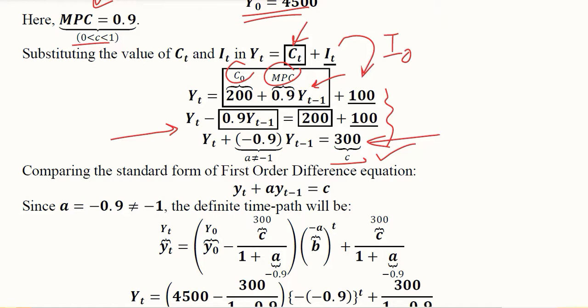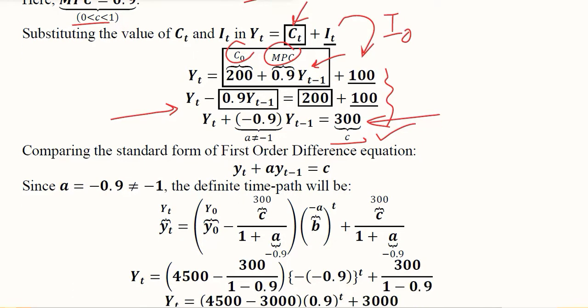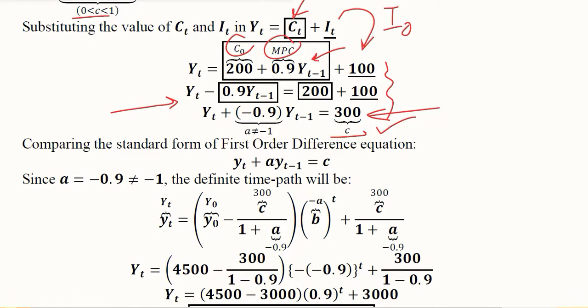We have the coefficient that is -0.9. Here we can also do a small tweak to make it adjacent to the standard form of the first-order difference equation, that is by introducing plus one here in the subscript as well as in the other variable.